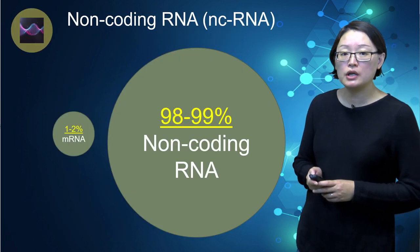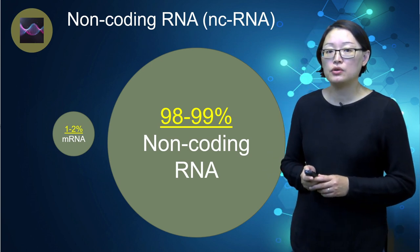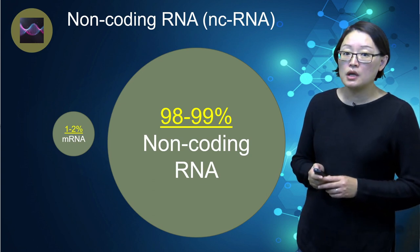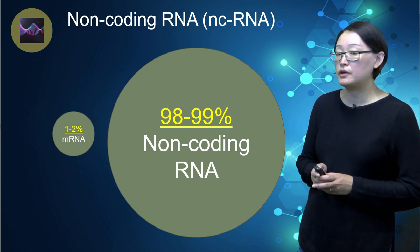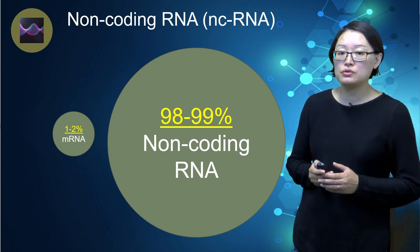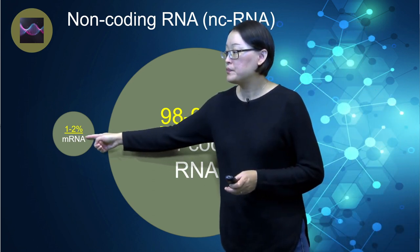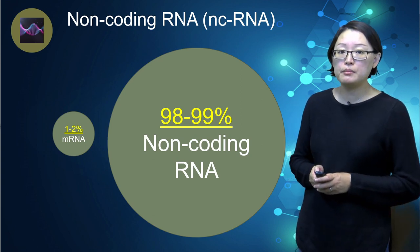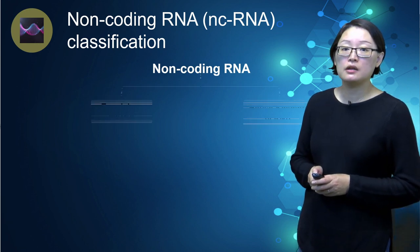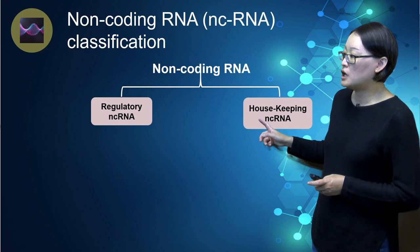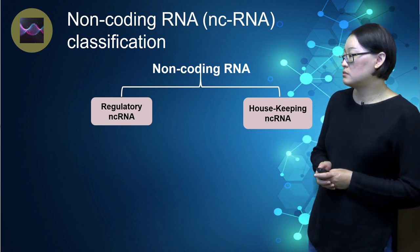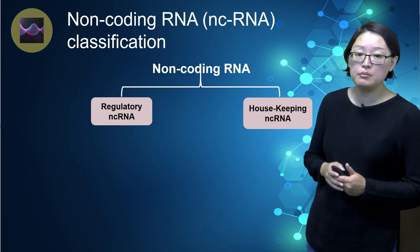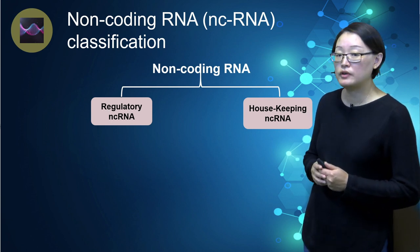Next, let's talk about non-coding RNA. The human genome contains three billion base pairs, and only one to two percent of the DNA is coding, meaning it can be turned into a protein. This one to two percent DNA is transcribed into coding RNA, known as messenger RNA or mRNA. A large majority of our genome is actually non-coding RNA. There are many types of non-coding RNA — they can be either regulatory or housekeeping depending on their functions. Regulatory non-coding RNA can regulate gene expression through various mechanisms, and housekeeping non-coding RNA is mainly involved in the transcription and translation of RNA into protein.